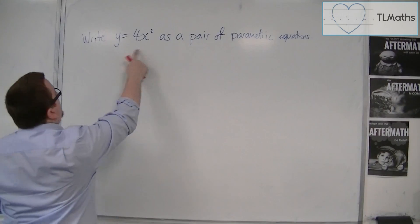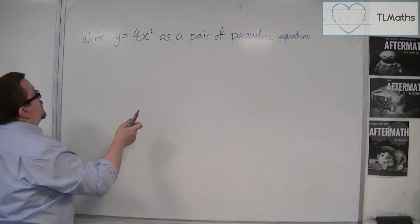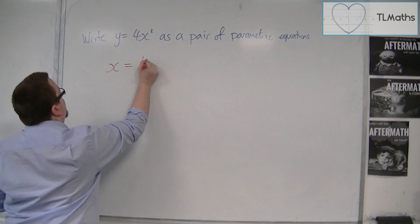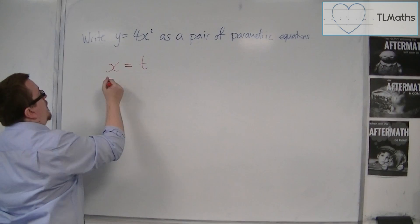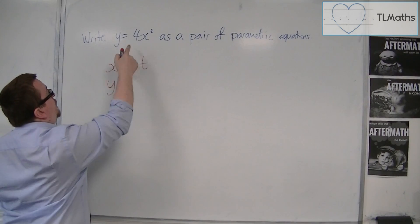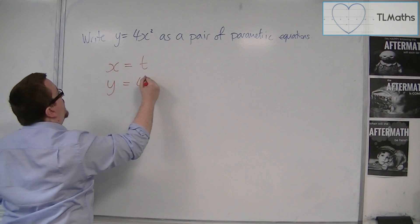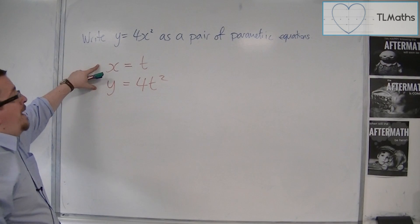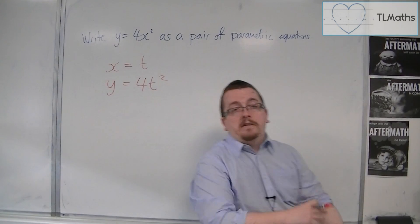So if we've got y equals 4x squared, then what you could do is just write it as x equals some parameter t, and then you could say that must mean if y equals 4 lots of x squared, then y is also equal to 4 lots of t squared. And you've now written it as a pair of parametric equations. So that would probably be the easiest way of doing it.